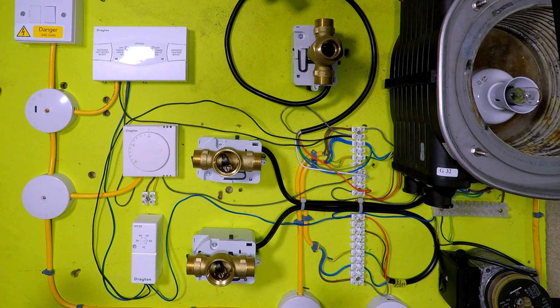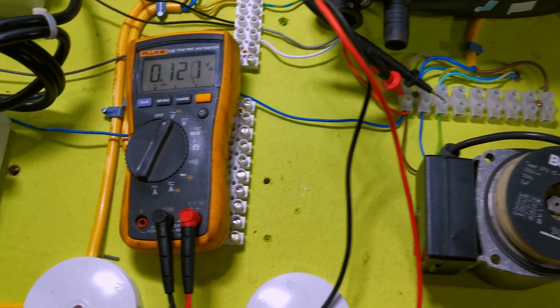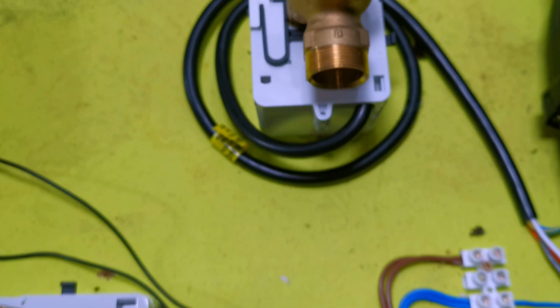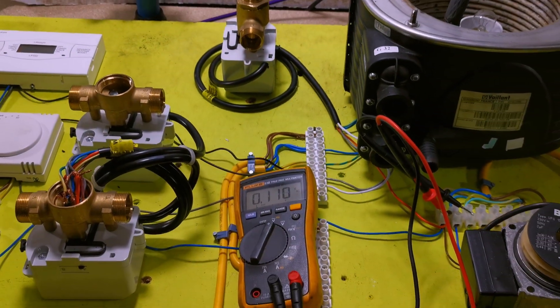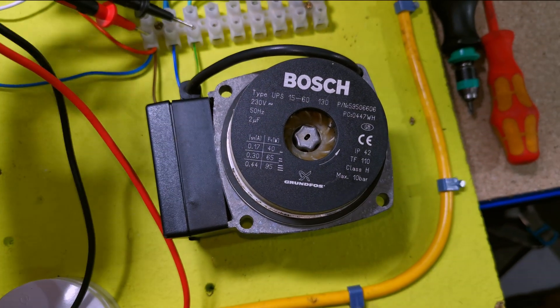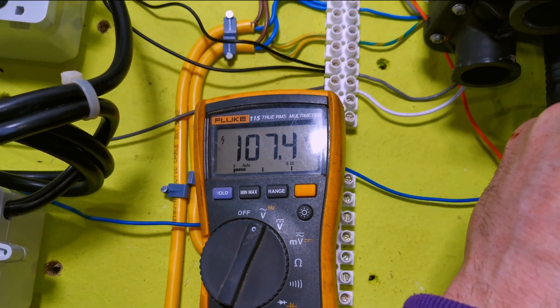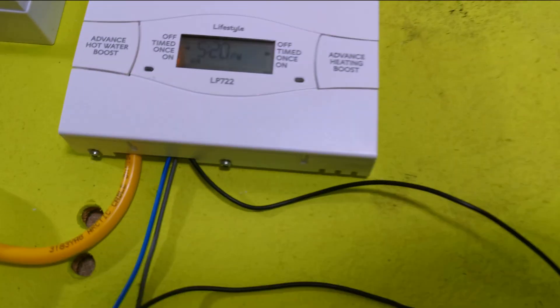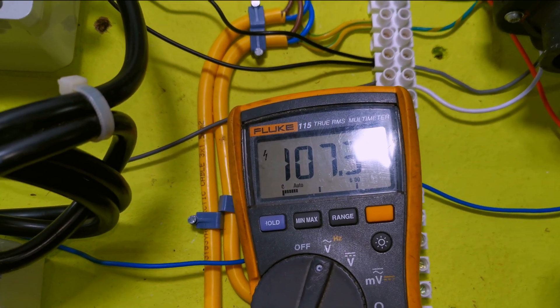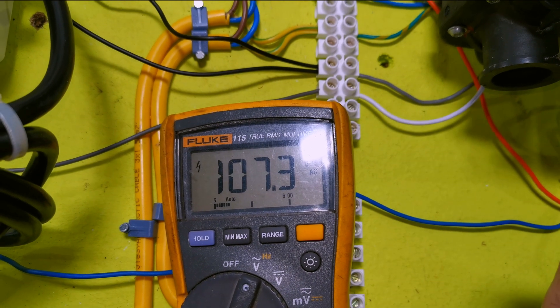Okay, so here we are, we're now going to measure the back feed voltage created by this valve being in heating only. So here we go. So as you can see with everything off, the valve is sending 107 volts down the orange.